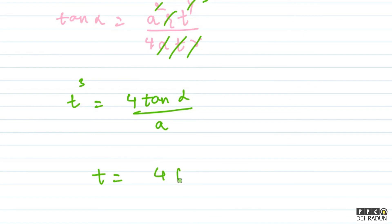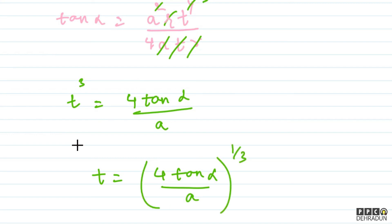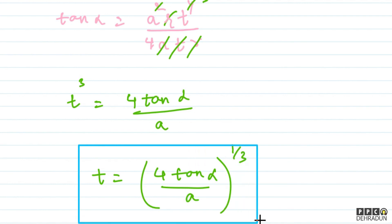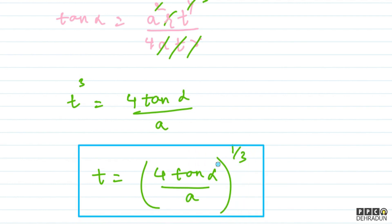So the final answer is: t = (4 tan α / a)^(1/3). At this time, the net acceleration makes angle alpha with the velocity vector. I hope you understood the solution well. In case any doubt remains, feel free to contact me — I'll be very happy to help. Take care, bye bye!